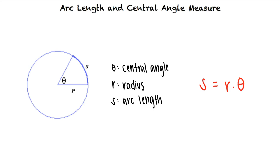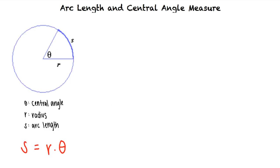Let's take a look at an example problem. A circle has a radius of 2 inches. Find the length S of the arc intercepted by a central angle of 90 degrees.